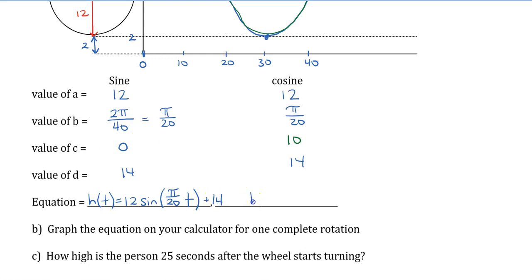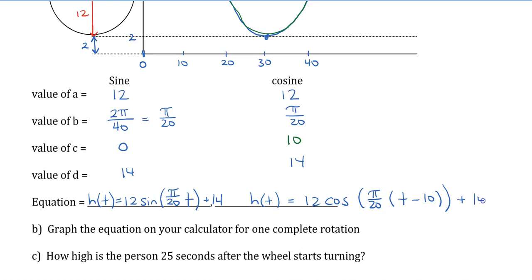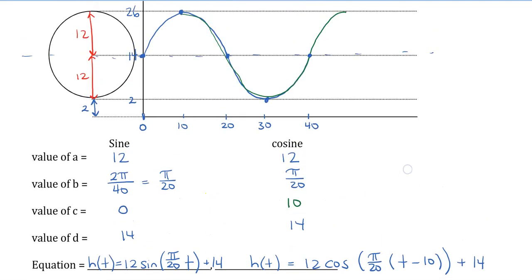For the cosine equation, we want to start at the top and get the cosine shape, so there's a phase shift of 10. Opening a bracket: h(t) = 12cos(π/20(t - 10)) + 14. This gives the vertical displacement of plus 14. And this is how you write the equation for sine and cosine for this Ferris wheel problem.